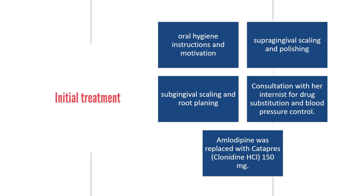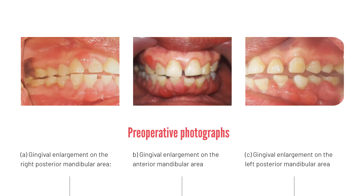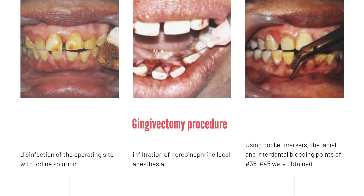Pre-operative photographs show gingival enlargement in the right posterior area, anterior area, and left posterior area. Gingivectomy procedure was performed in three visits, starting with the anterior area, then the left and then the right posterior of the mandible.